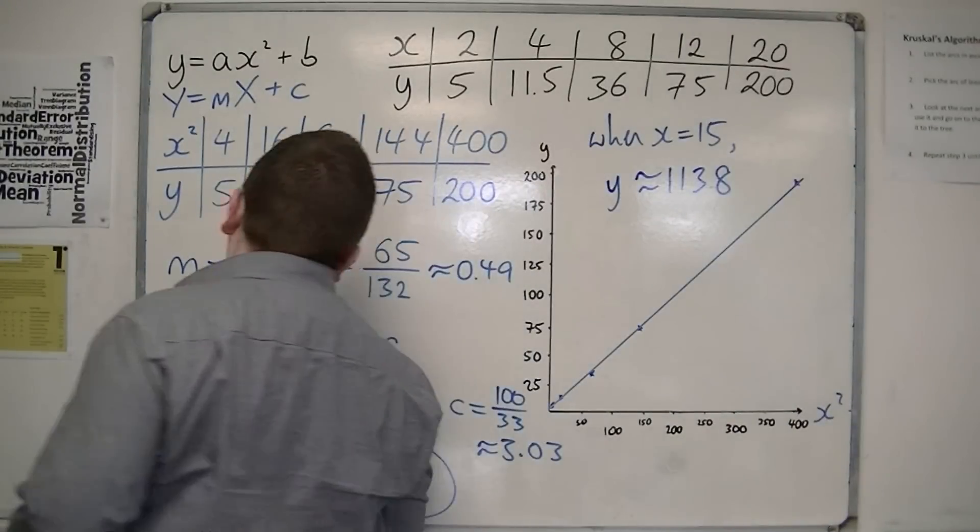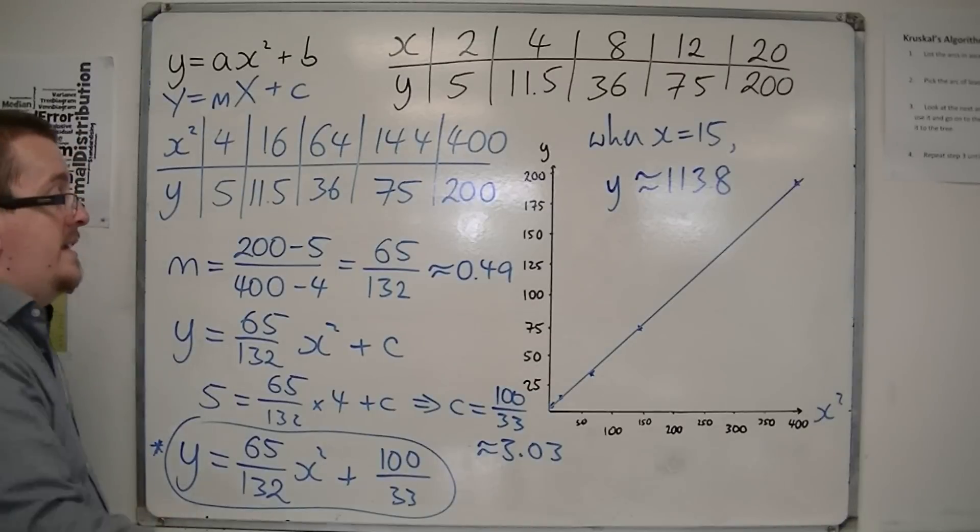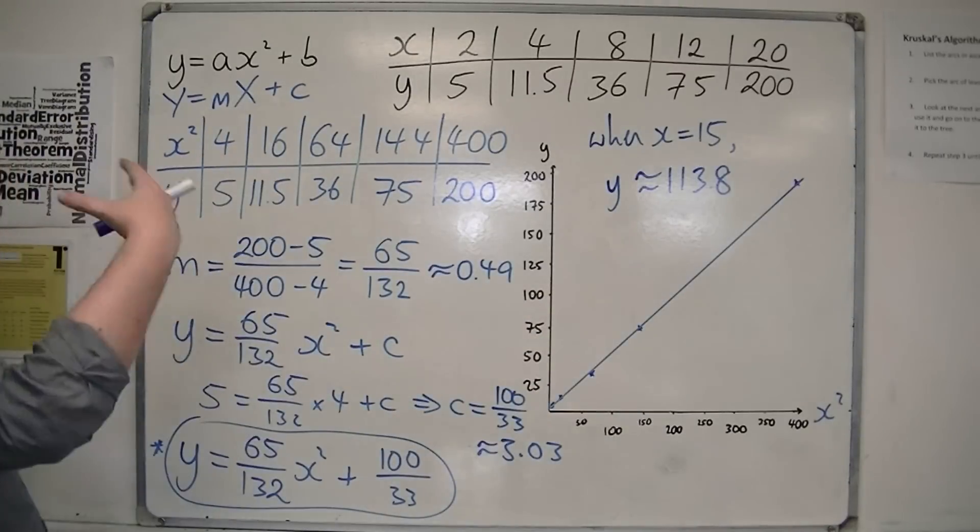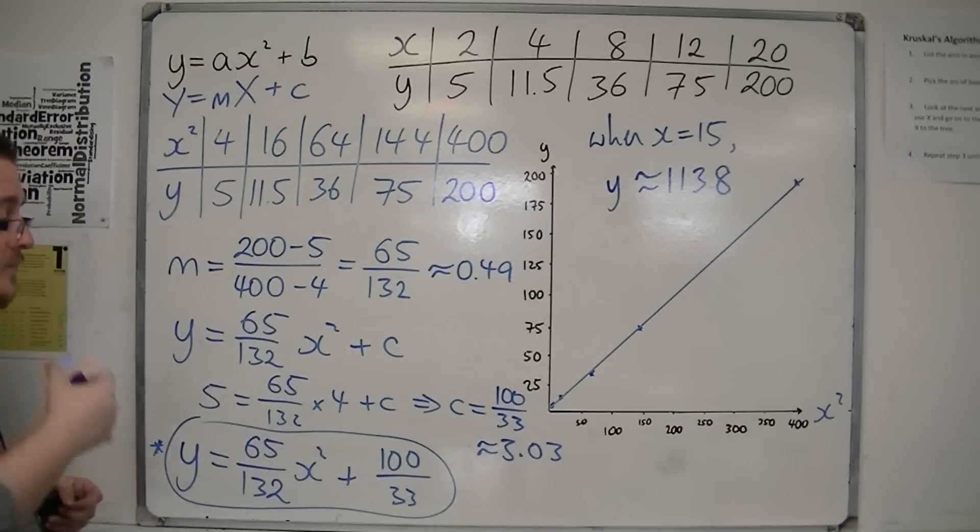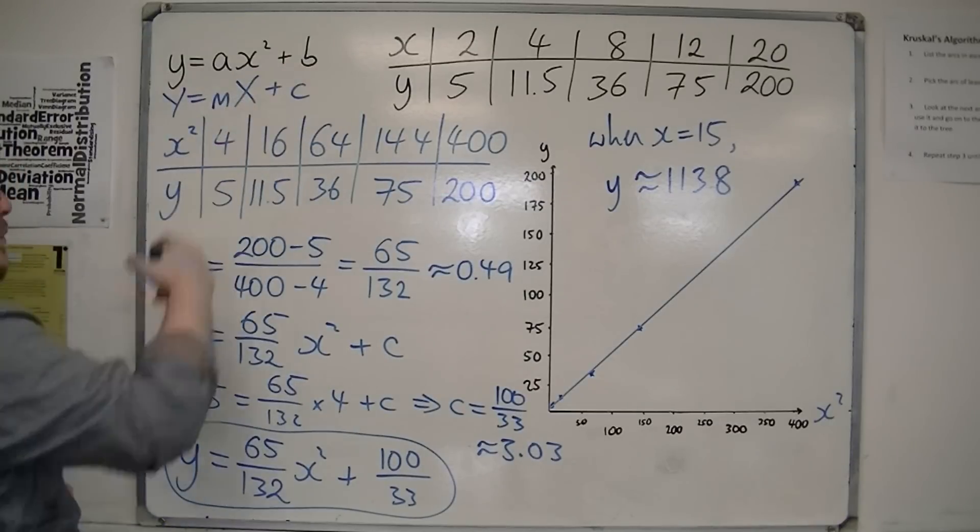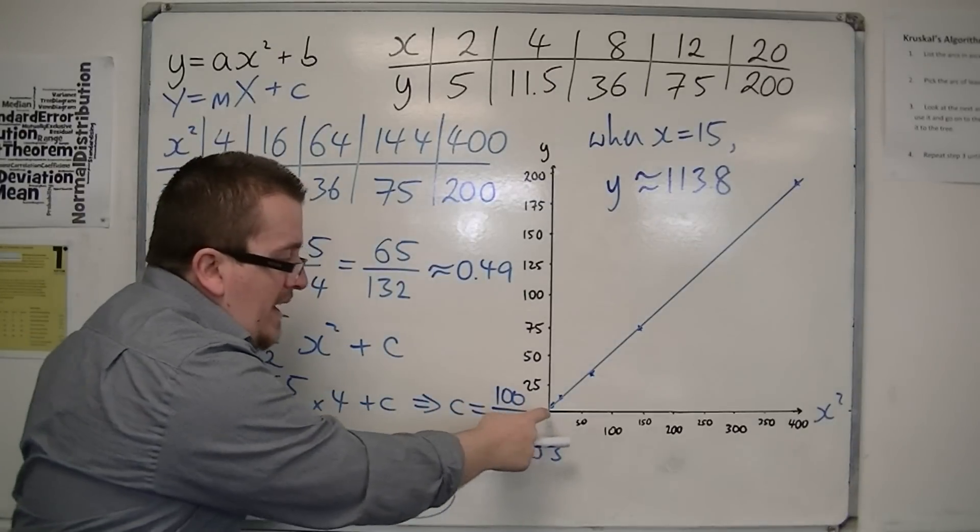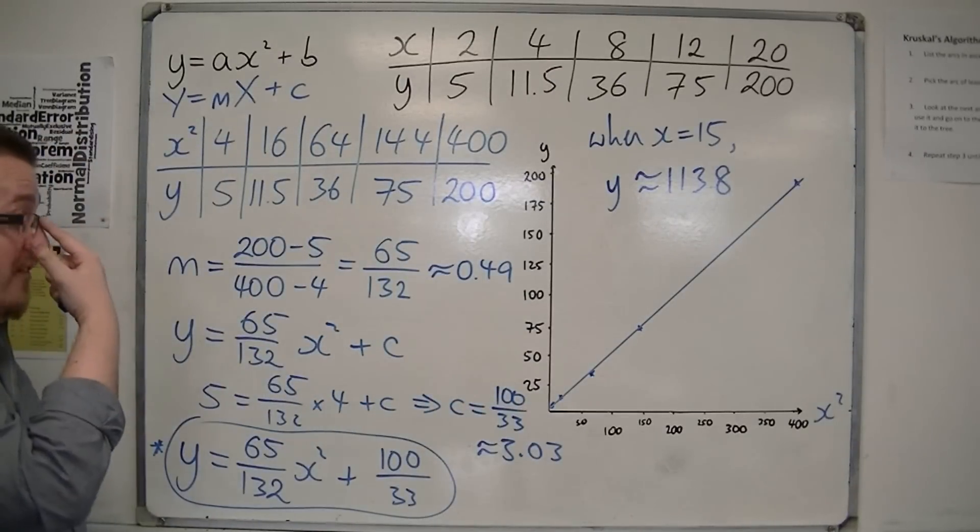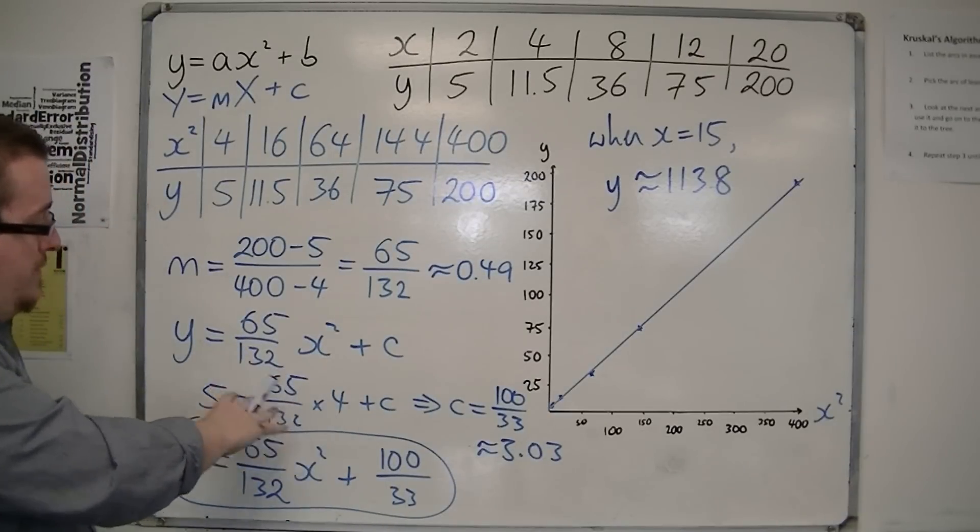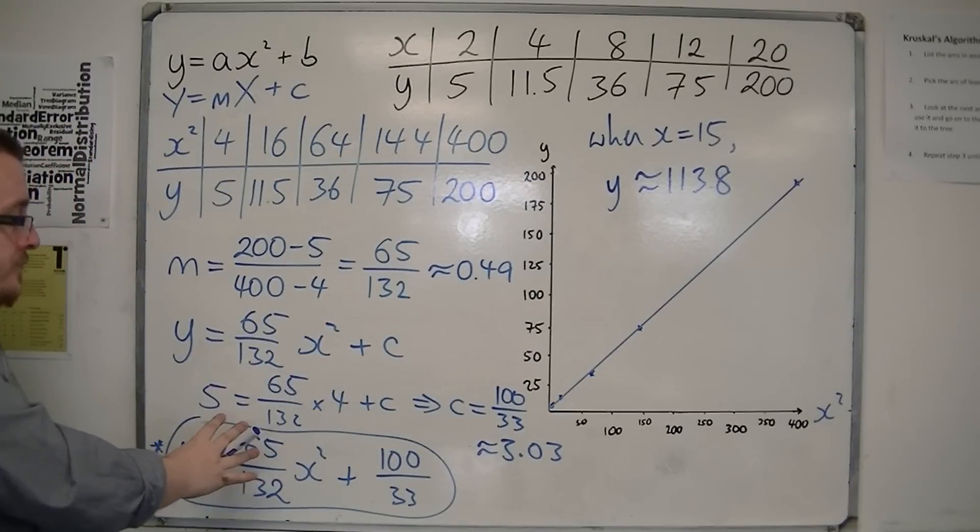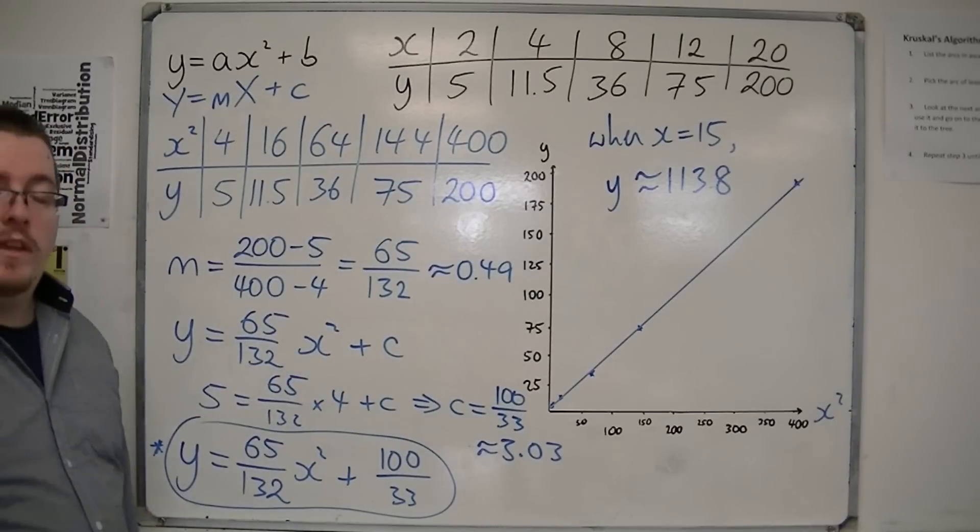So, as I said, working out the value of a in this case, or the gradient of the straight line, choose two points that are on the line, and then you can work out the gradient that way. Now, as for the value of b, if you've got an accurate graph, you should be able to read it off of the graph. But if not, you can go about it by finding the y-intercept in this way. So plug in a point and find out what that value of c would have to be.